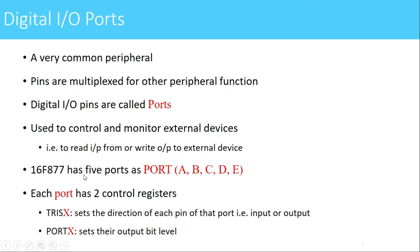PIC16F877 has 5 IO ports, namely port A, port B, C, D and E. These are the 5 IO ports available in the PIC microcontroller.